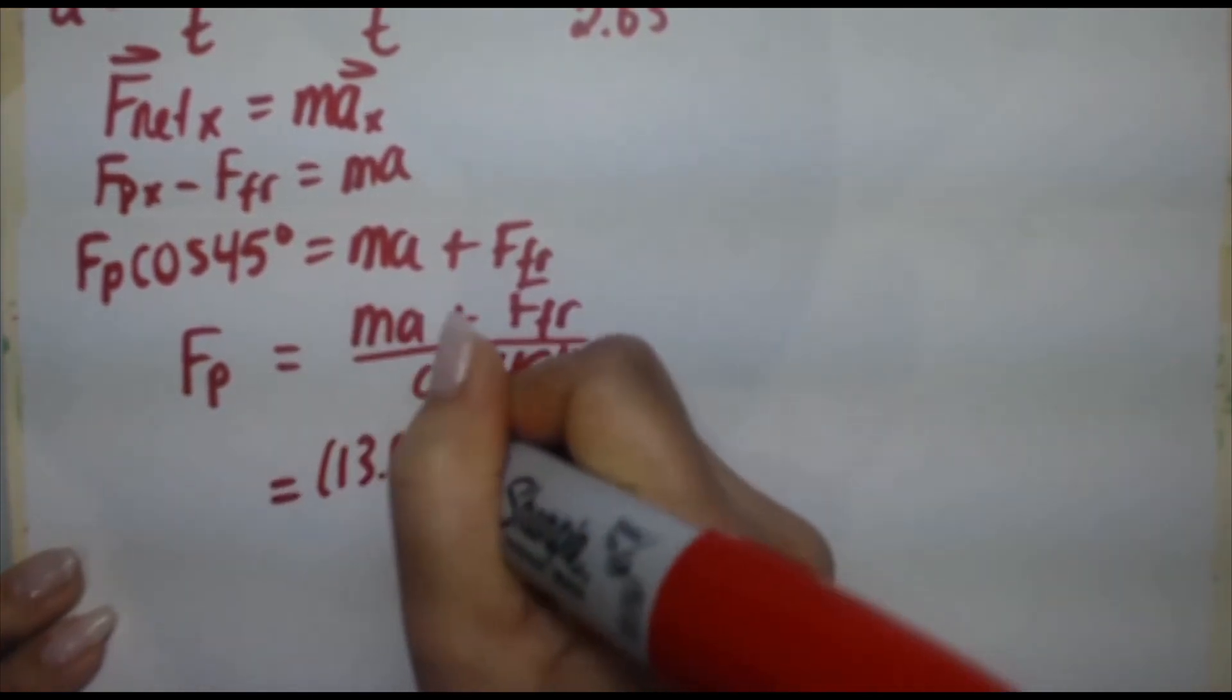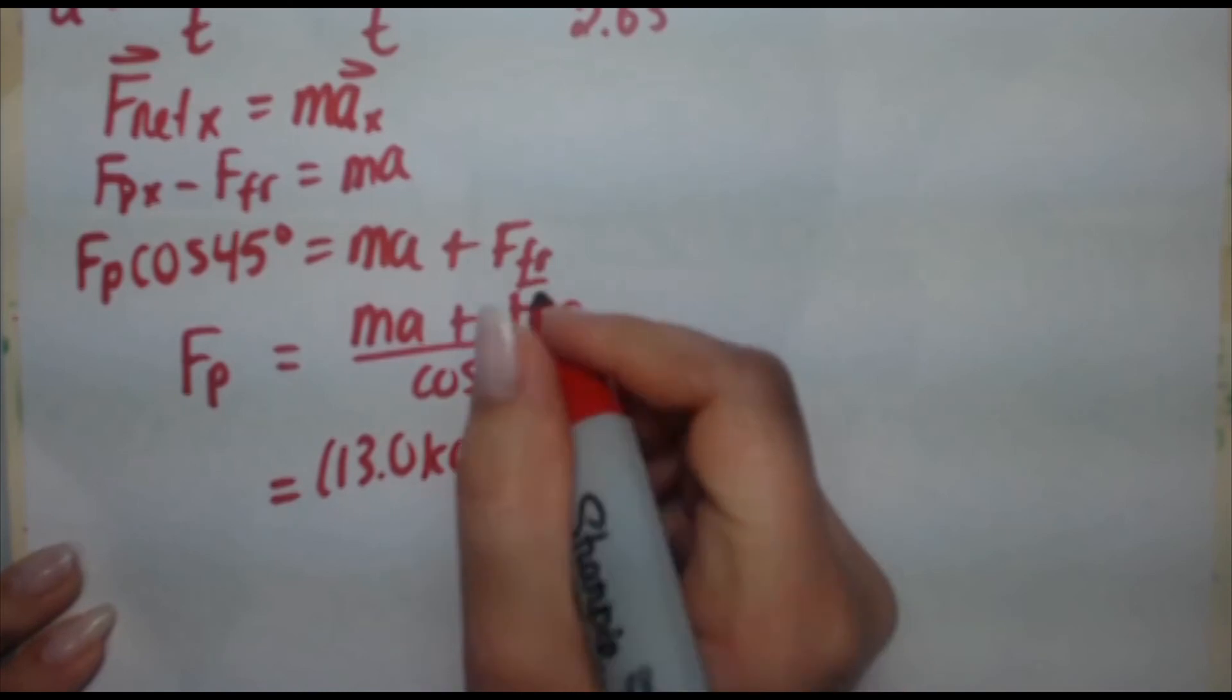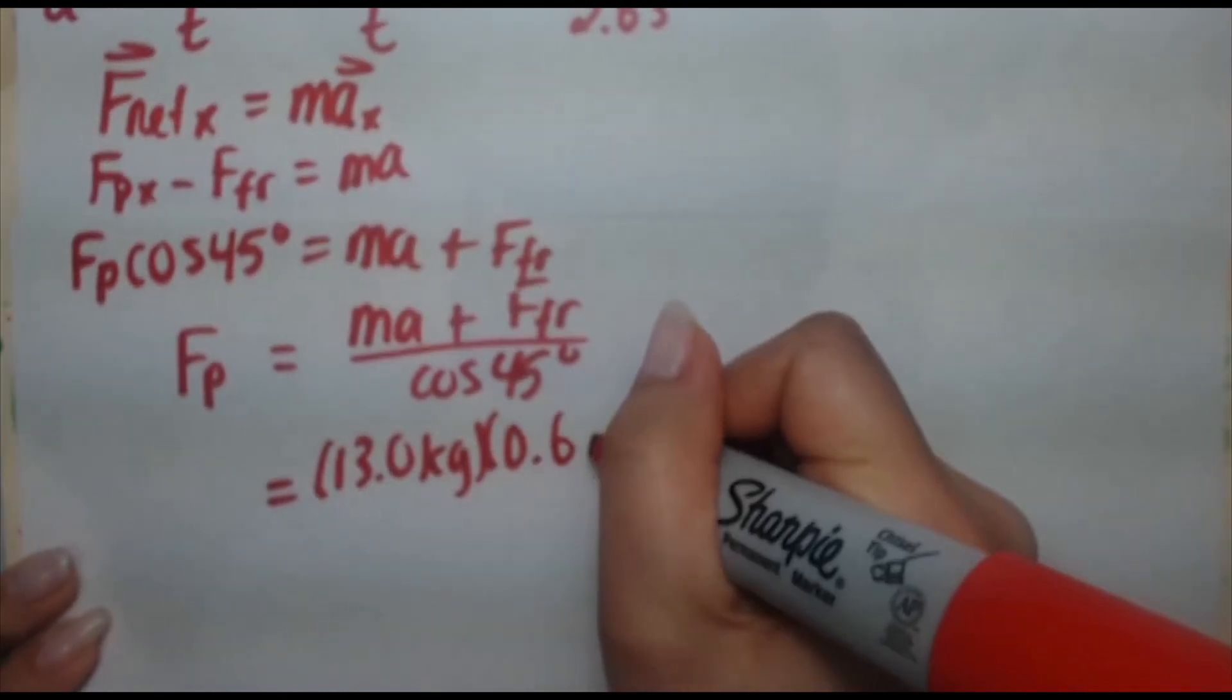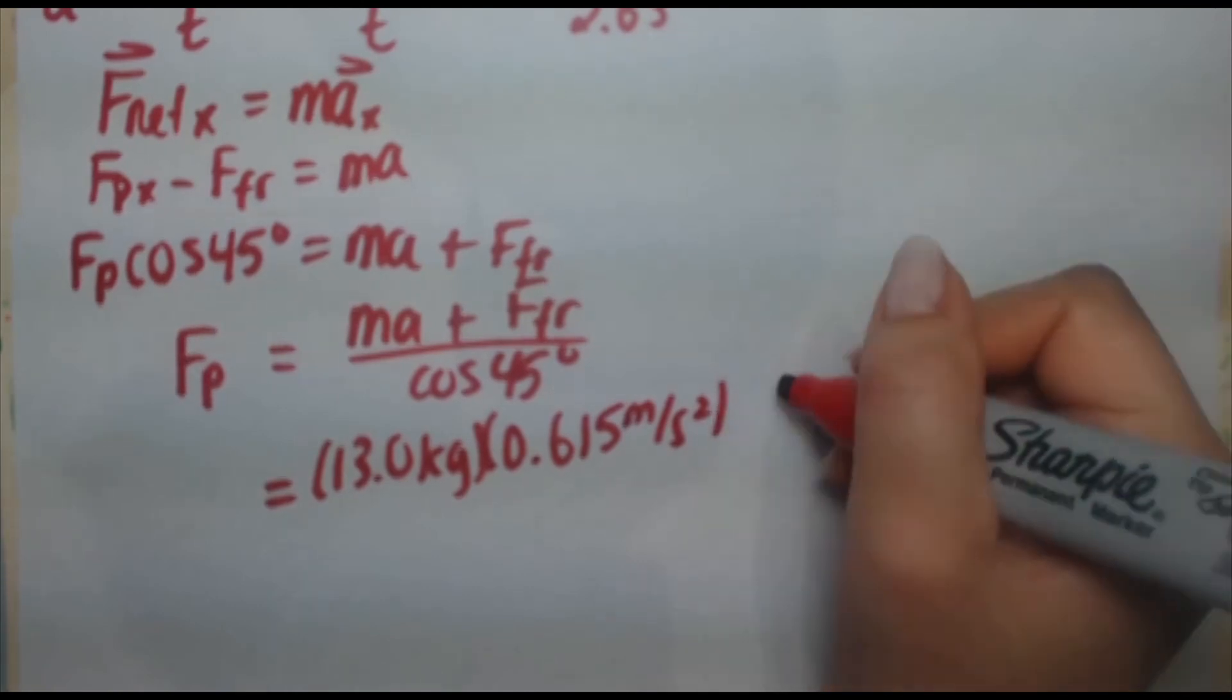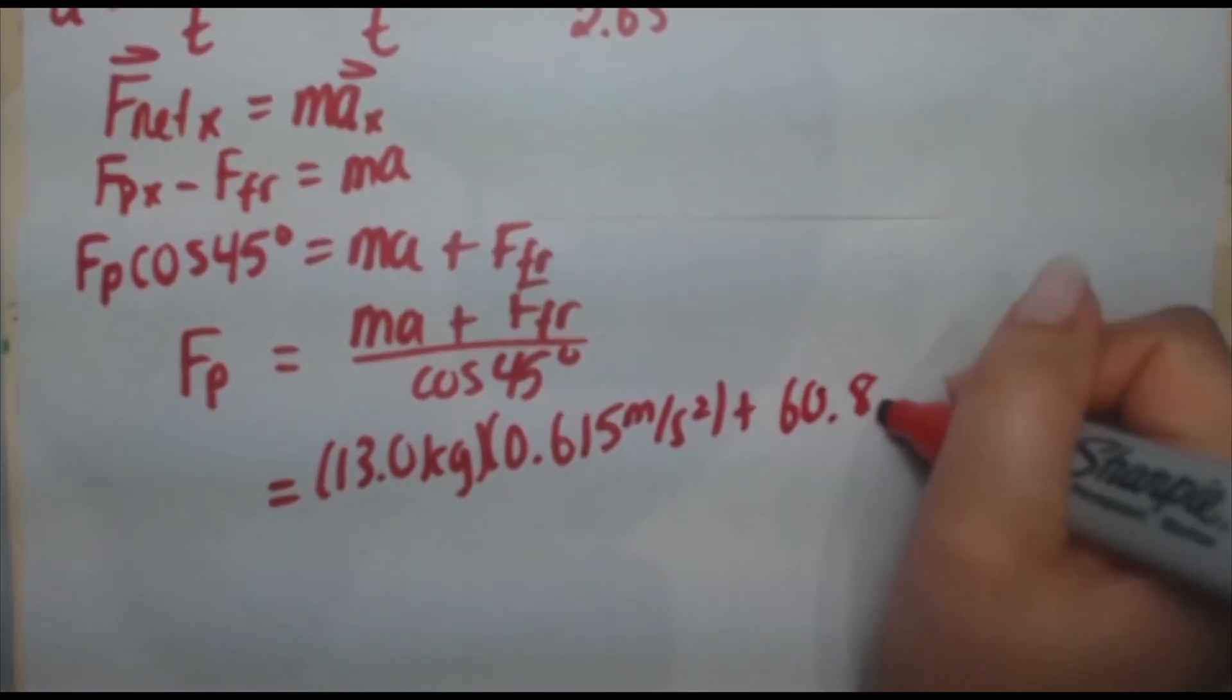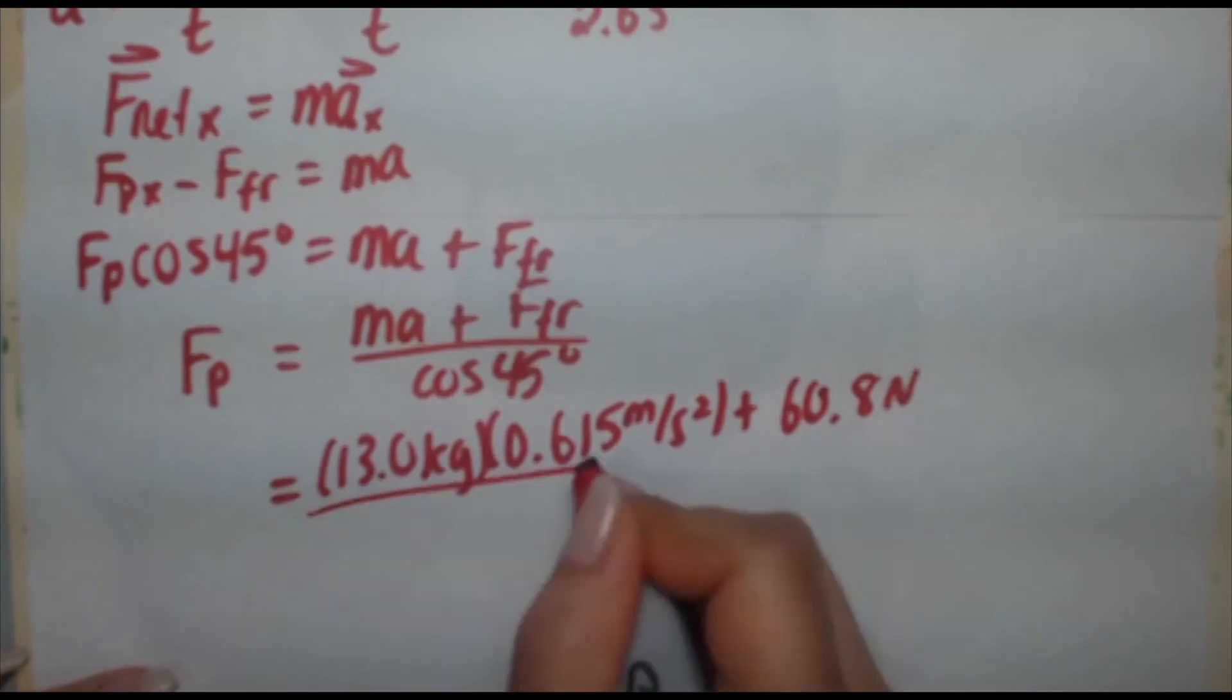Okay, so I'm going to start plugging my numbers now. Mass is 13.0 kilograms. Acceleration we just found to be 0.615 meters per second squared. Okay, our friction force is 60.8 Newtons.